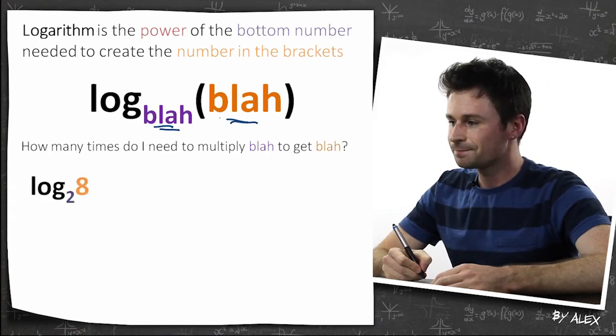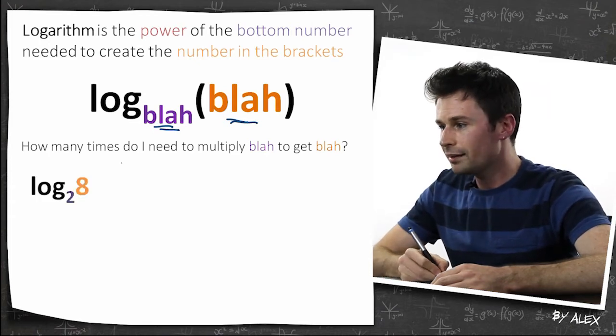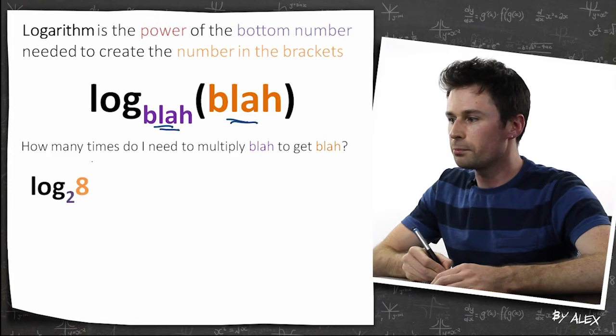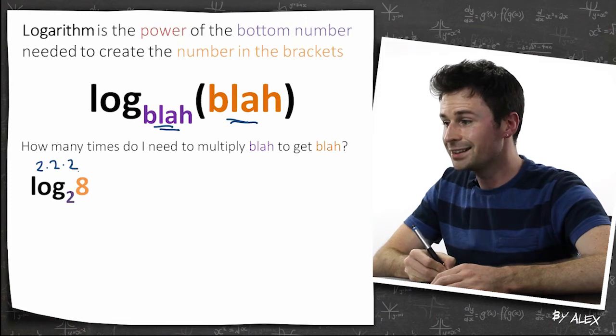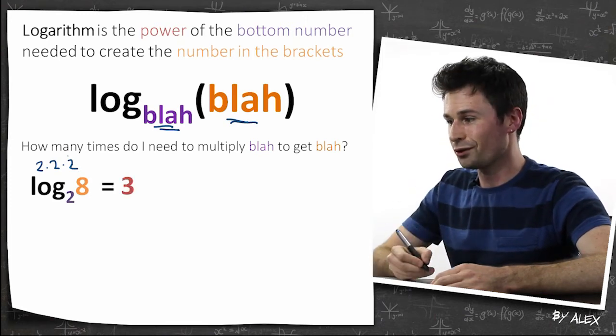So let's have a look at this. If you've got log base 2 of 8, that means how many 2s do I need to multiply by each other in order to get 8? So if you've got 2 times 2 is 4 times 2 is 8. So I need three 2s to get this, so the answer is 3.